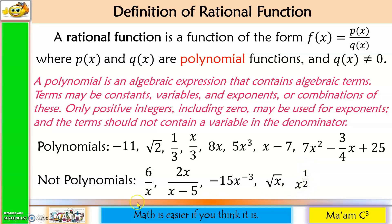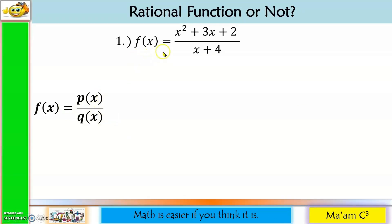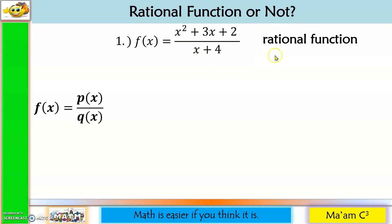Let us determine whether the following is a rational function or not. Remember that a rational function is a ratio of two polynomials. Number one: f(x) = (x² + 3x + 2) / (x + 4). Our numerator is a polynomial and the denominator is a polynomial too. Therefore, this is a rational function.